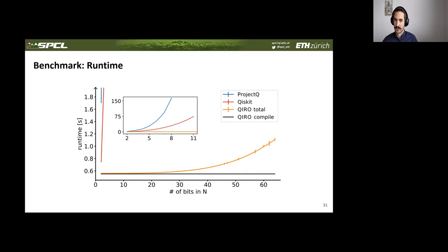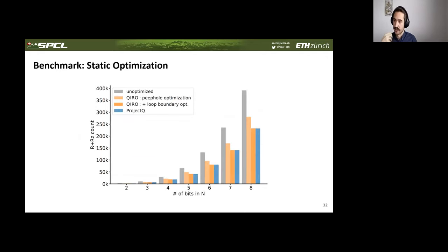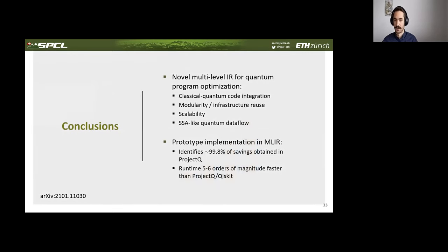If we extrapolate this to useful input sizes, say for cracking RSA at 2000 bits, we would get something like 10 to the four and 10 to the three years in Project Q and Qiskit, respectively, to run optimizations and get the resource counts compared to about a week in KIRO. So this is really cool, but are they actually useful? We compared the gate counts that we obtained in Project Q with those we obtained in KIRO with very similar optimizations. We have the peephole optimizations we implement in KIRO, and if we include those optimizations across loop iterations, we obtain very similar optimization results as in Project Q.